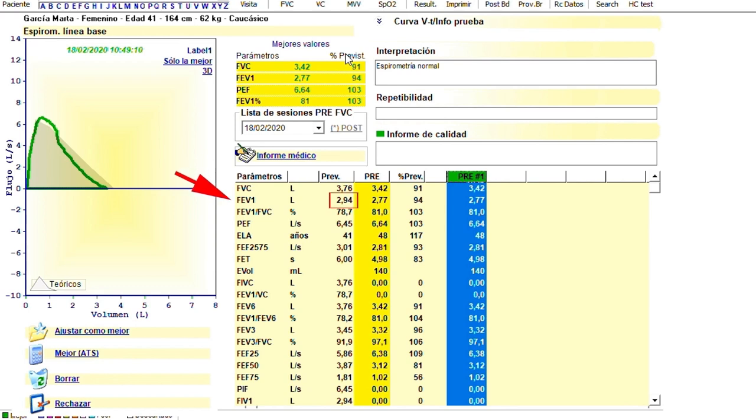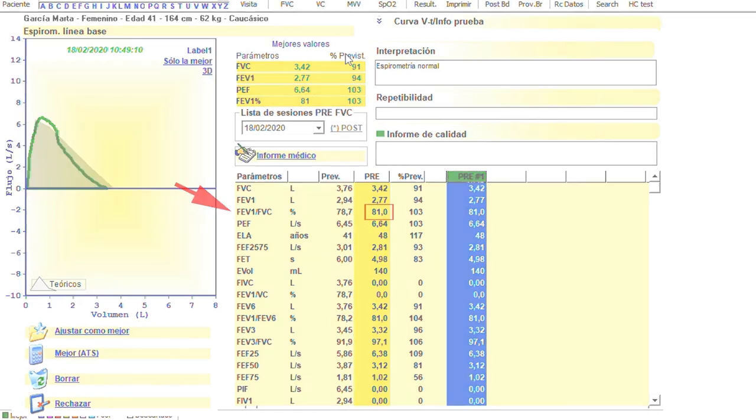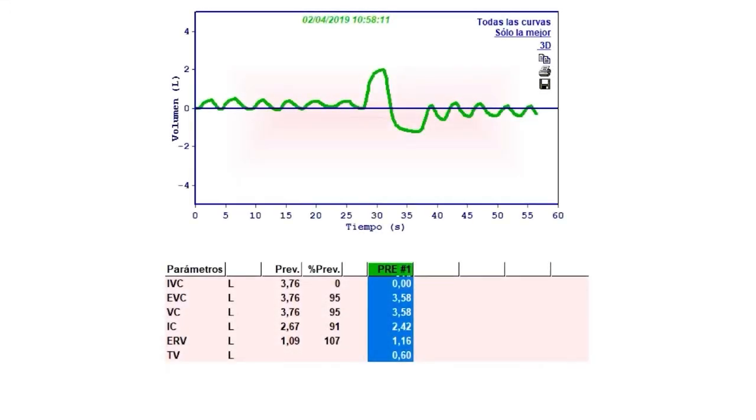For the FEV1, the ideal value was 2.94 liters and she has mobilized 2.77, which represents 94 percent. If we calculate the quotient between FEV1 and forced vital capacity in percentages we will obtain 81 for this person. If we take the vital capacity obtained in simple spirometry which gave us 3.58 liters, we can then calculate the Tiffeneau index which is in this case 77 percent. Therefore, the results show a normal pattern.